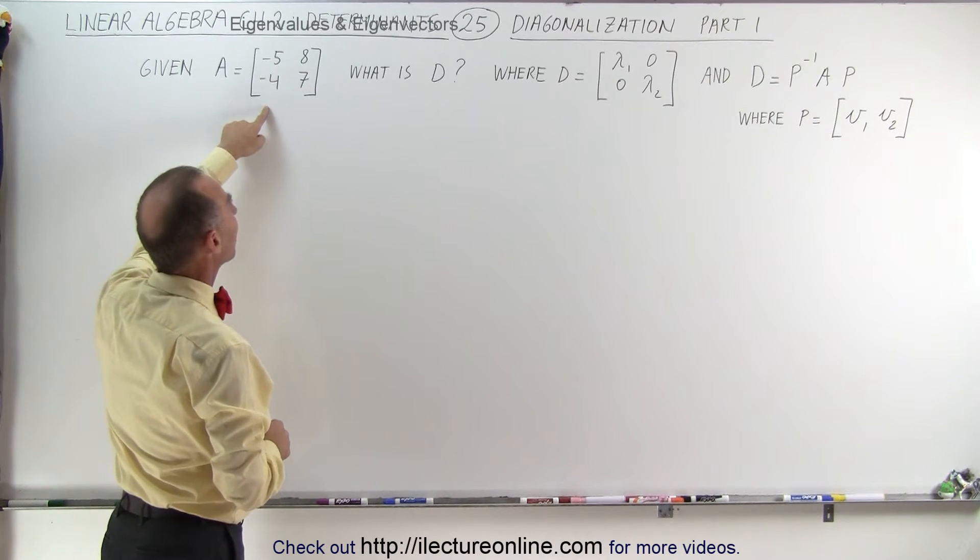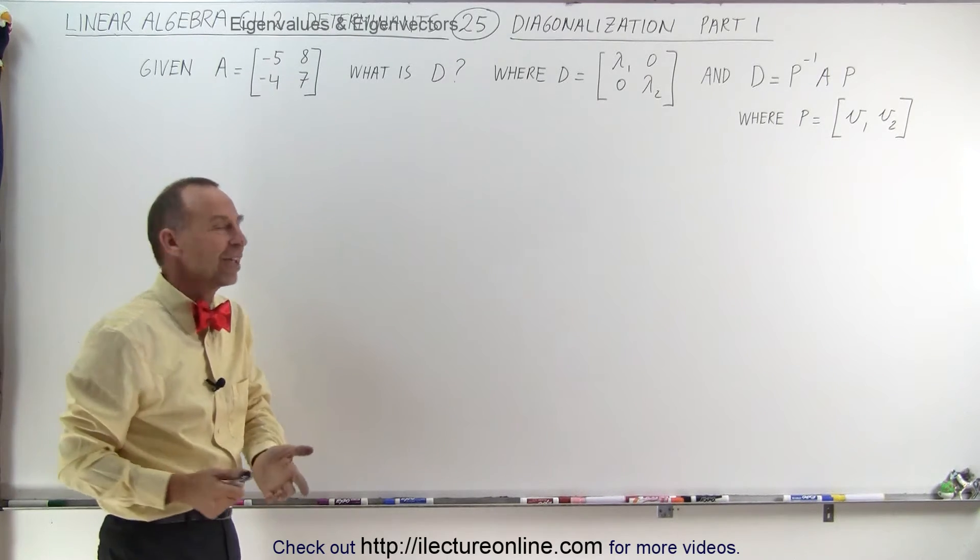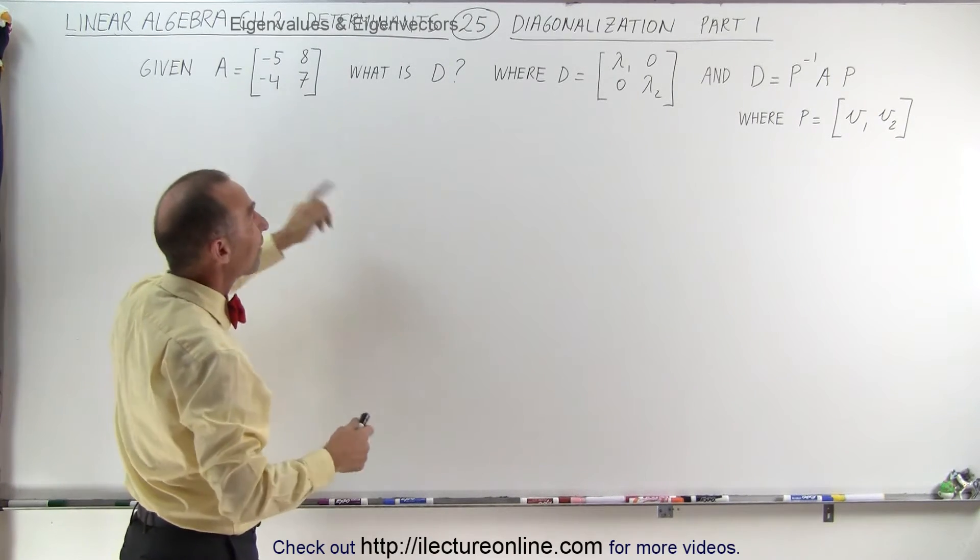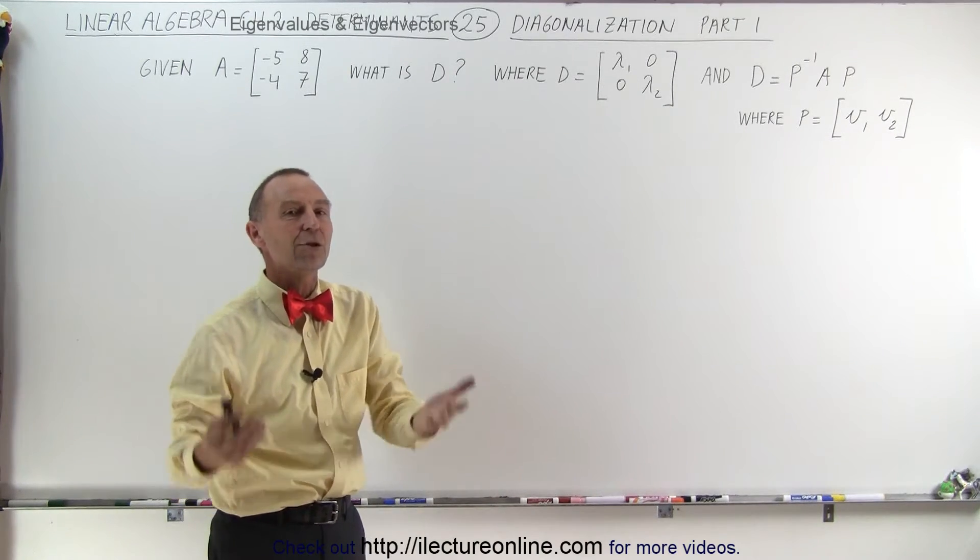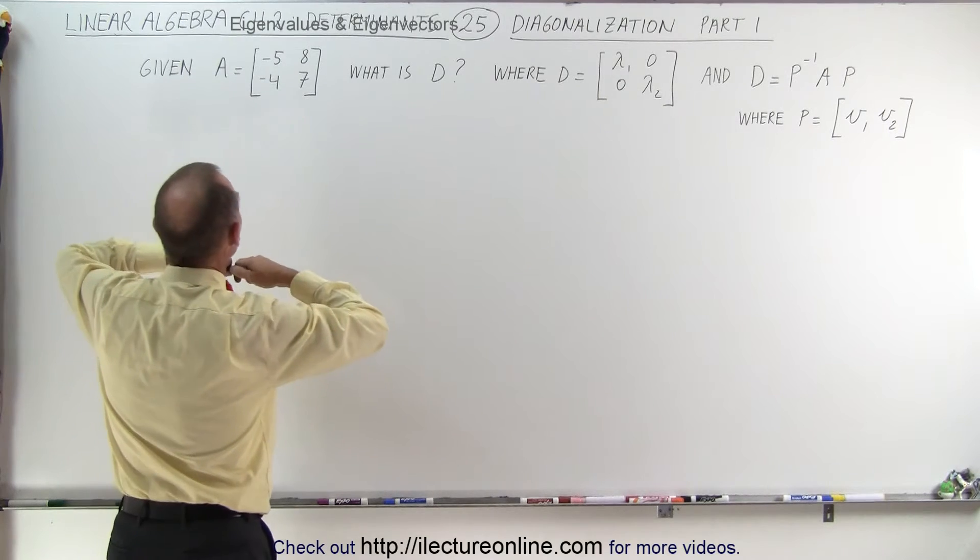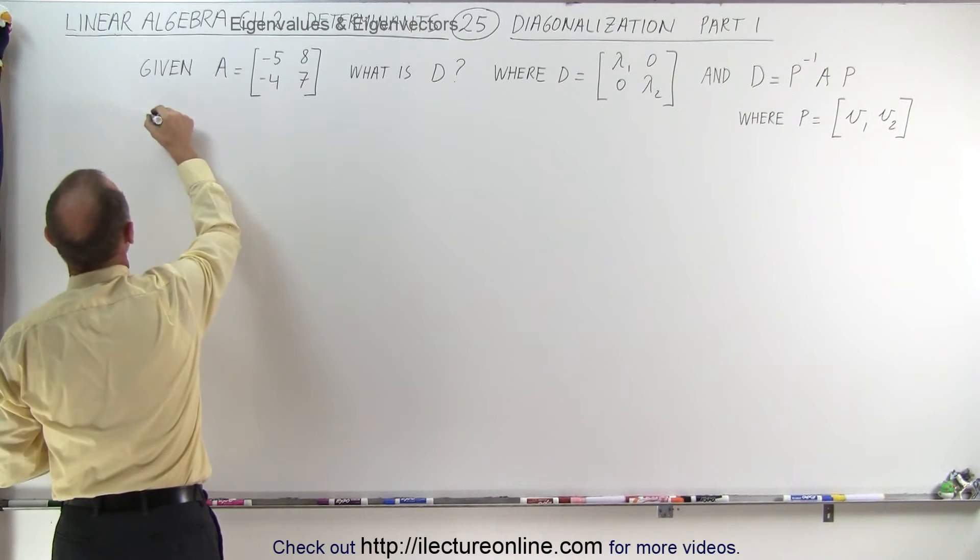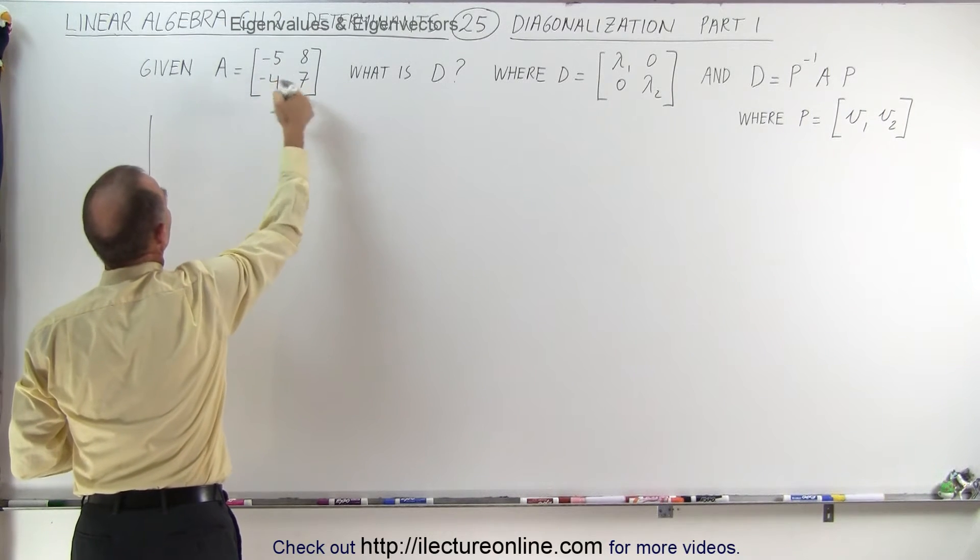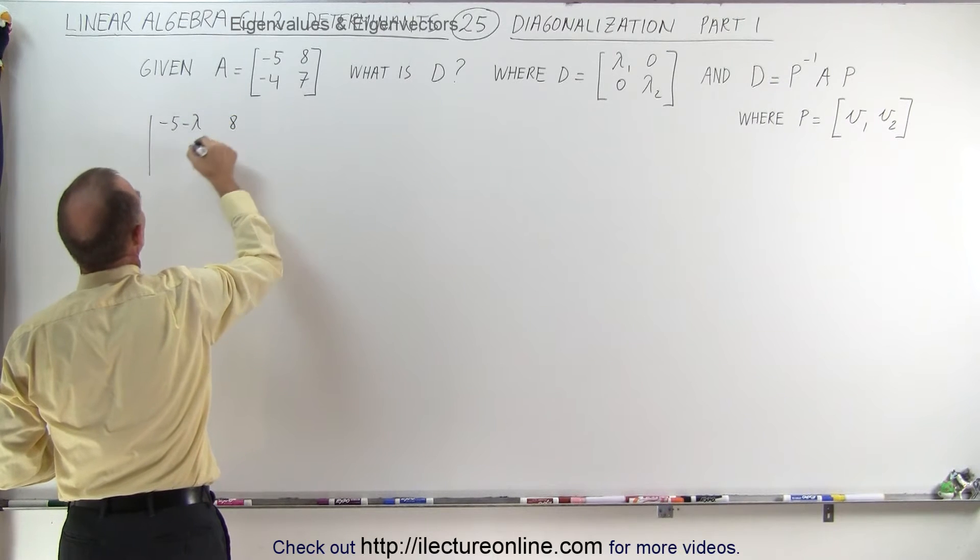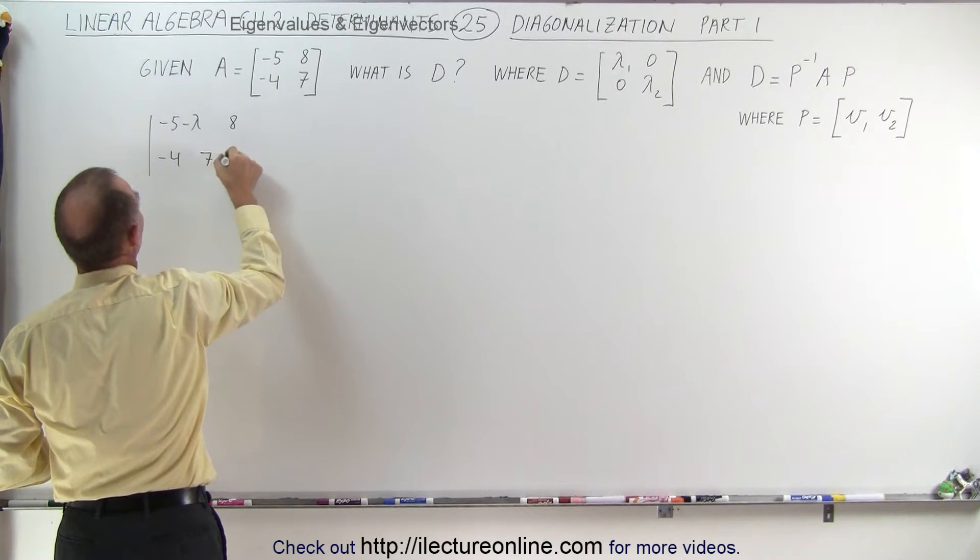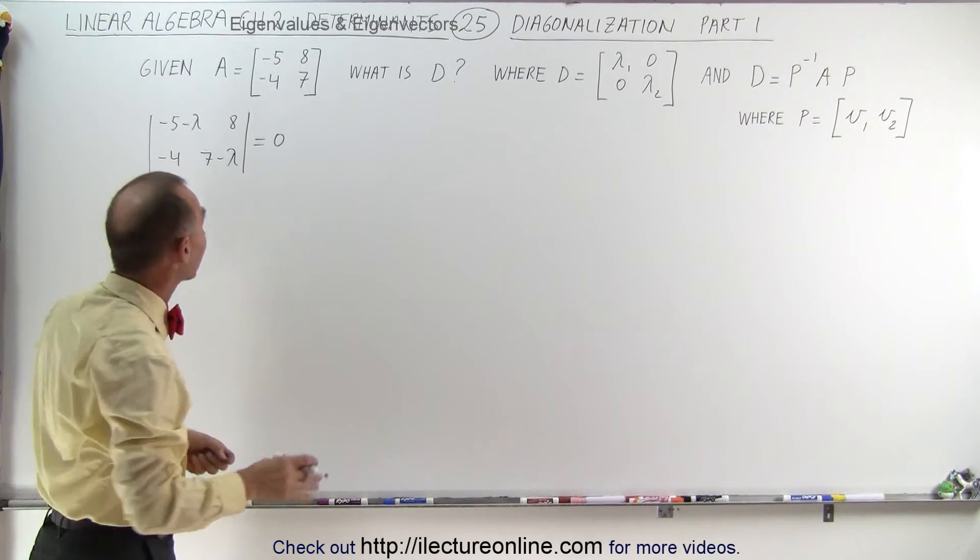So let's start with that principle first. First we need to find the diagonalized matrix of A by finding the eigenvalues. Now we know how to find eigenvalues in the old-fashioned way so let's do that for some practice. We're going to turn this into a determinant and subtract the eigenvalues from the diagonal here. So minus 5 minus lambda, 8, minus 4, 7 minus lambda, and we're going to set that equal to 0.